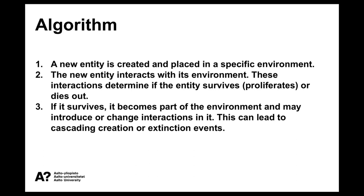The algorithm is as follows. First, a new entity is created - it's not necessarily created by an outside force, it can be created from within the system - and then it's placed in an environment. The entity interacts with the environment, and these interactions determine if the entity survives and proliferates or dies out. If the entity survives, it becomes part of the environment, and it may introduce or change the interactions in the environment. This can lead to cascading creation or extinction events, like we saw in these self-organized critical models - we have these cascades of new species creation or species going extinct.